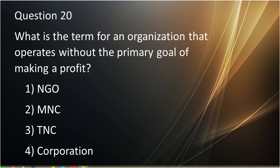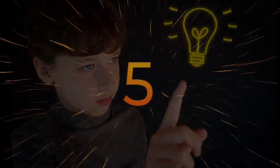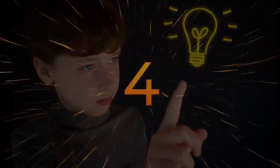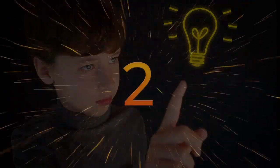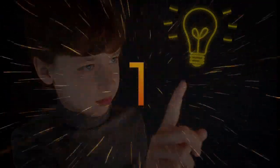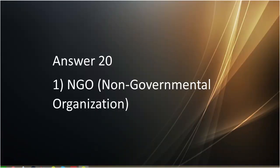Question number twenty: What is the term for an organization that operates without the primary goal of making a profit? First is NGO. Second is MNC. Third is DNC. Fourth is corporation. Answer to question number twenty is NGO, which is non-governmental organization.